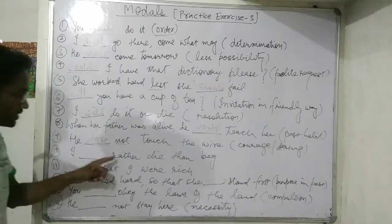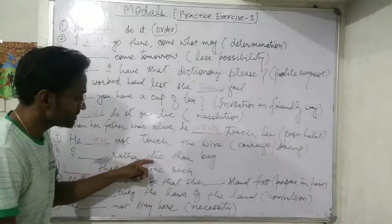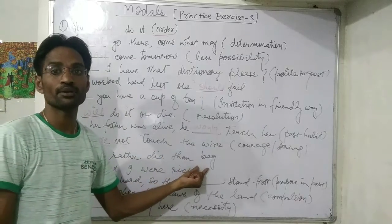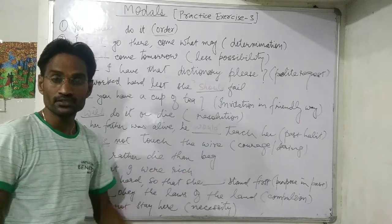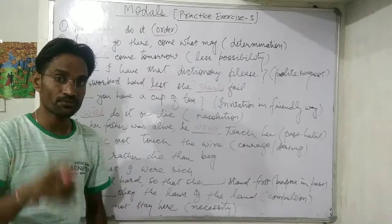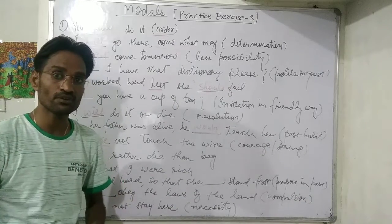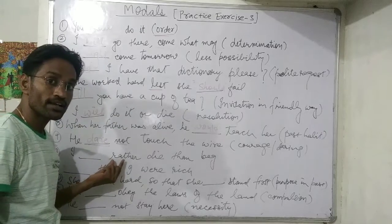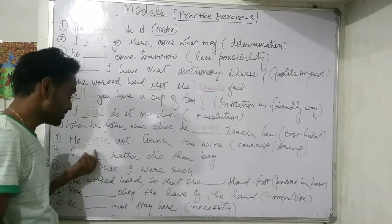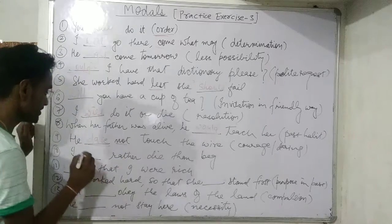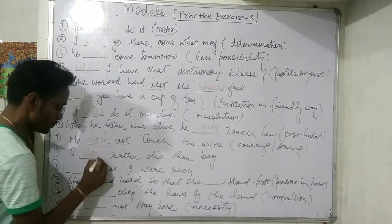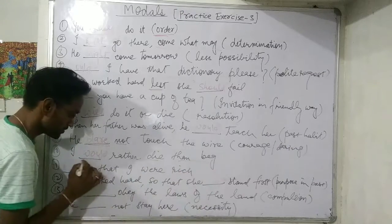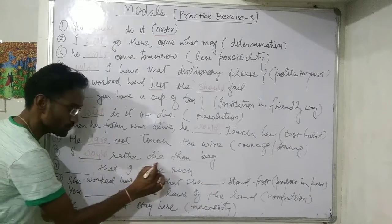Next, that is preference. For preference, we use the modal 'would' with the 'would rather' structure. So: 'I would rather die than back down.' This is your preference — that you would like to die rather than back down.